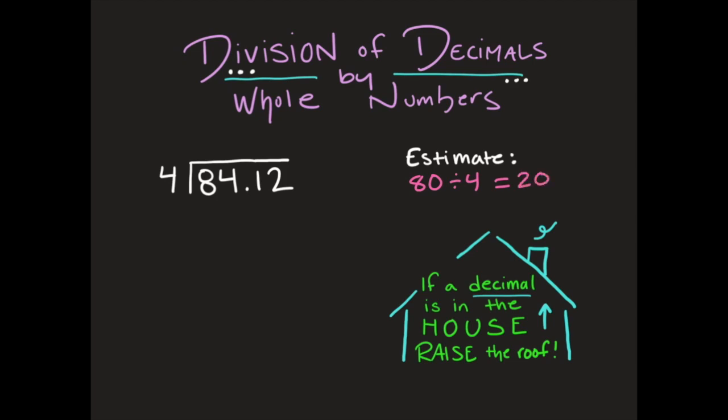Another estimate you could use is 84 divided by 4, which gives you 21. So right now we're looking at an answer that's going to be about 20 or about 21, and we're going to use that later to check our work.